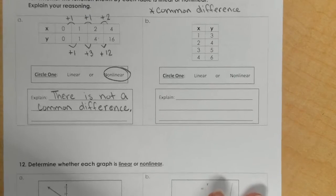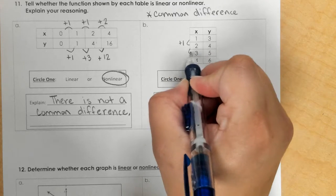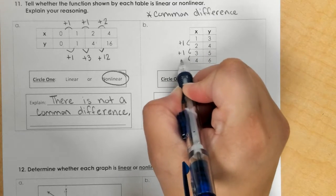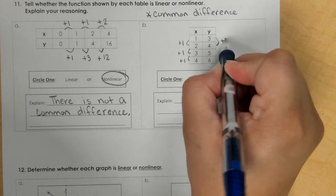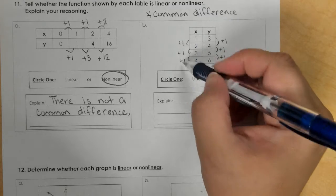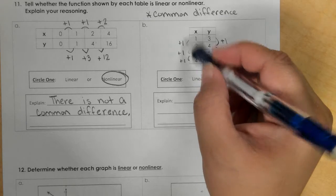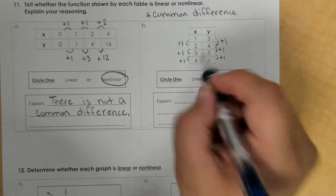In part B, from 1 to 2, we increase 1. 2 to 3 and 3 to 4, that's an increase of 1. On the y column, we increase 1, increase 1, increase 1. So since we have the same common difference on the x's and the y's, this is linear.